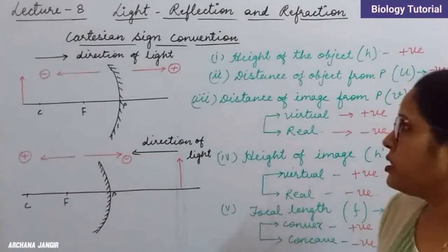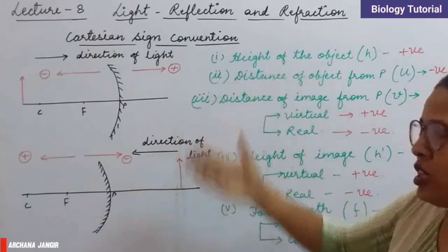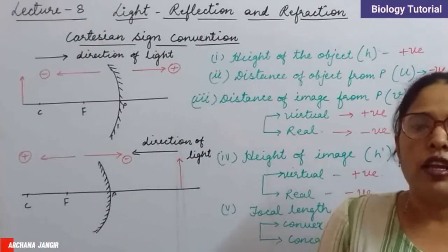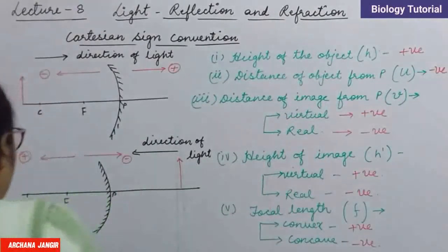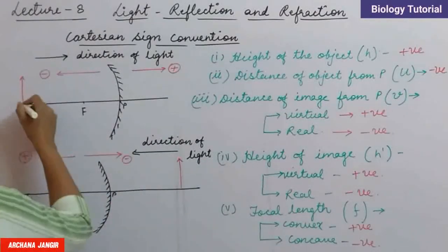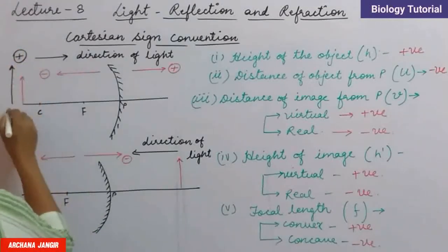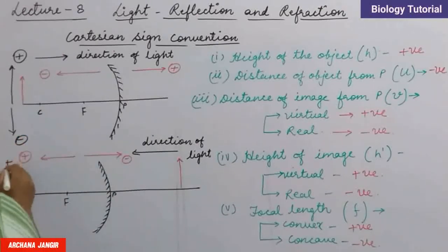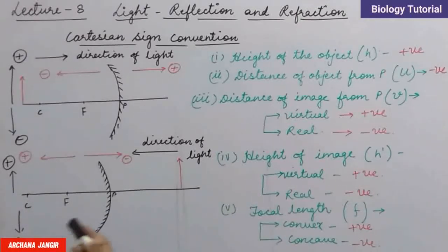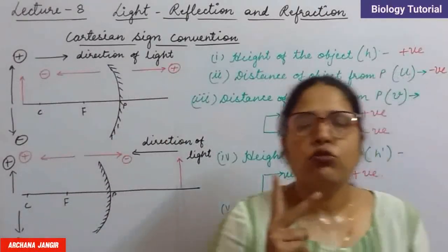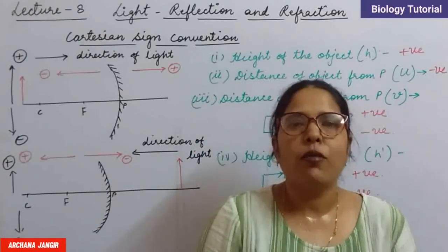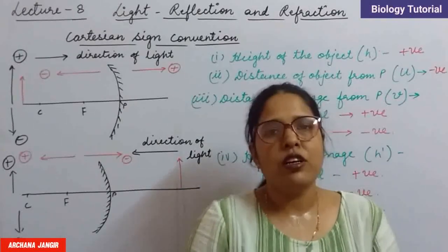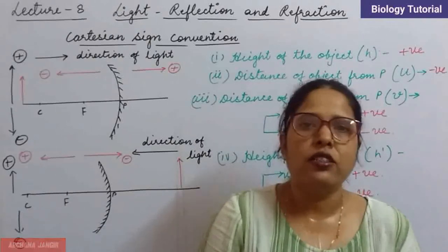So this is all about the Cartesian sign convention. Isko aap acche se yaad rakh sakte hain kyunki ye saari cheezein jab hum numericals solve karenge, kaam aane wali hain. Remember the two rules: distances in the direction of light from principal axis are positive, opposite to light are negative; above principal axis is positive, below is negative. In our next lecture, we will discuss about the mirror formula and its derivation. Thank you very much.